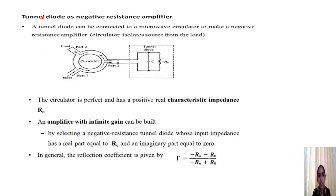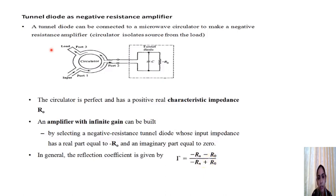Another characteristic is the tunnel diode as a negative resistance amplifier using a circulator. The input is provided at port 1, goes to port 2 where the tunnel diode is connected, and the amplified signal comes out at port 3, which is connected to a load. Signal flows in a circular fashion from the nth port to the (n+1)th port.